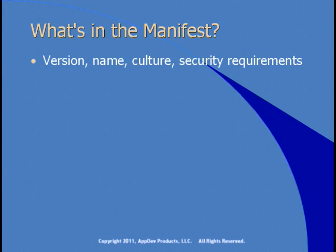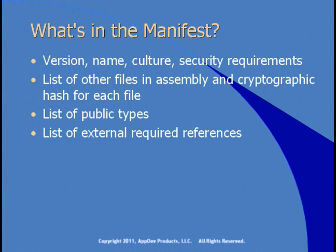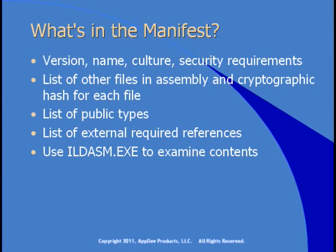The manifest includes version, name, culture, and security requirements. There's a list of other files in the assembly and a cryptographic hash for each file, so the .NET runtime can tell if a file has been modified. There's a list of public types exposed by the assembly and a list of external required references — other things the assembly needs in order to run. We'll be looking at IL-DASM, the IL Disassembler, which comes with the .NET framework to examine the contents.